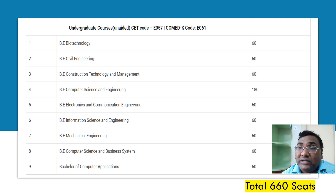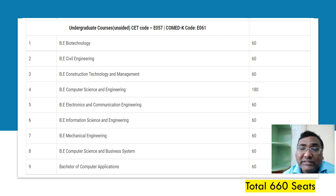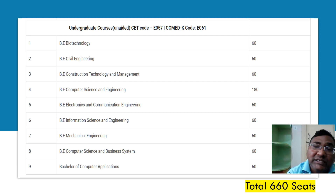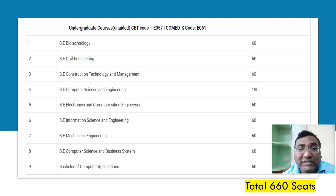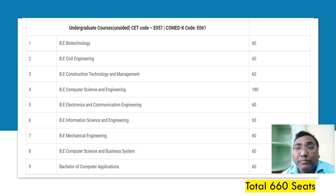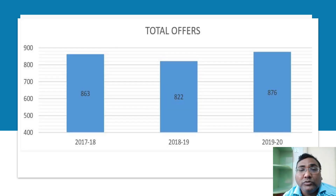If you add the computer science seats across both sheets — 180 in the unaided sheet plus 60 in the aided sheet — that's 240 students studying CSE. And another 60 are being added this year with the new code, so from this year it will be 300 CSE students. Other branches remain at 60, making it easy to compare branch-wise.